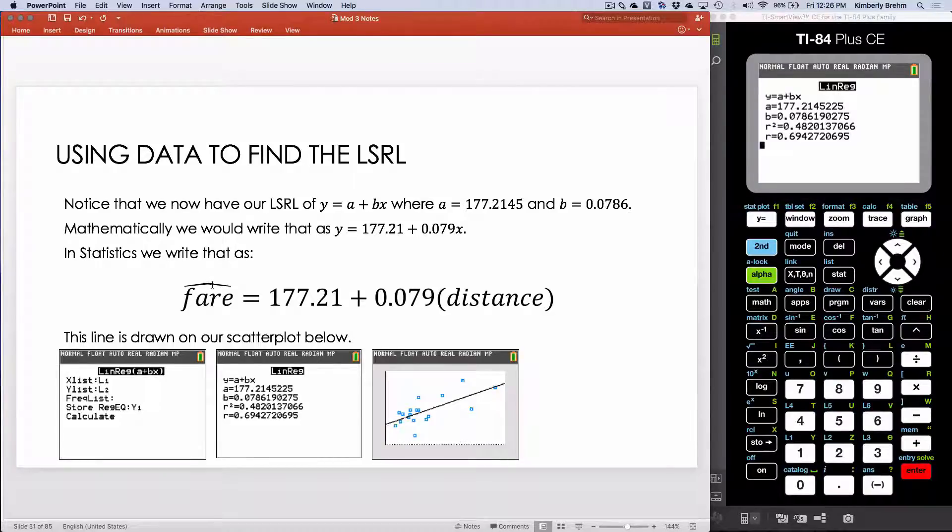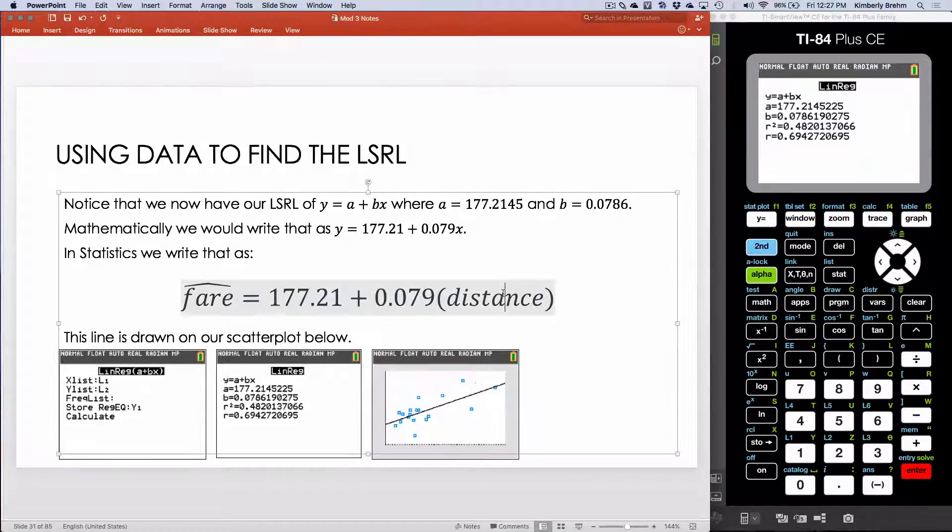So fair hat, again, saying it's probably not the actual fair, but it's what I'm predicting will happen. And again, I can see the scatter plot and the line that it drew. This equation is the black line that is drawn on my graph.